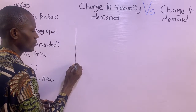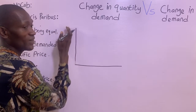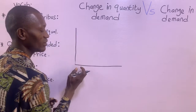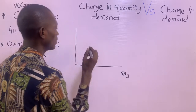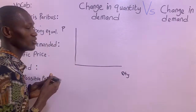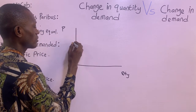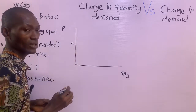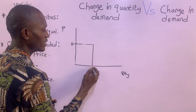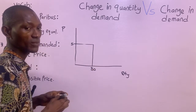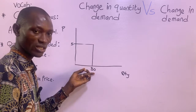Remember that this vertical axis is your price axis and this horizontal axis is your quantity demanded axis. So we have quantity demanded and we have price. Now let's assume the price of this marker was five naira and the consumer buys, let's say, 80 units of this marker. At five naira, the consumer buys 80 units.